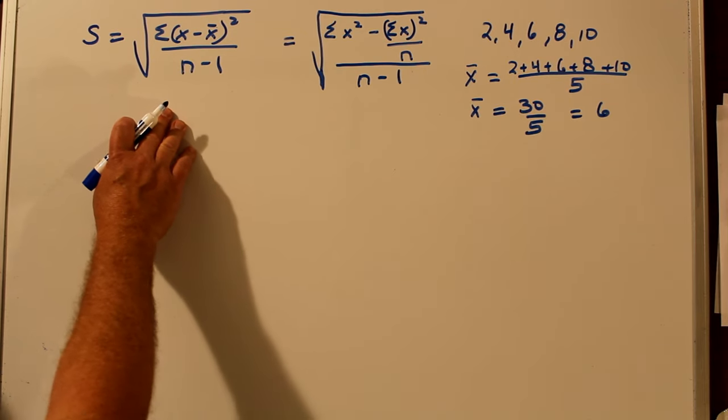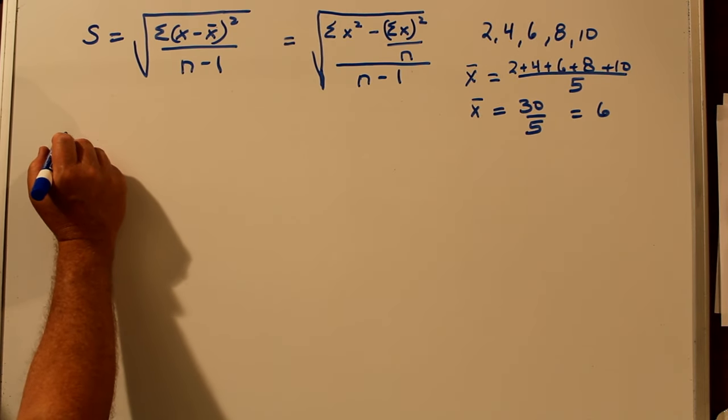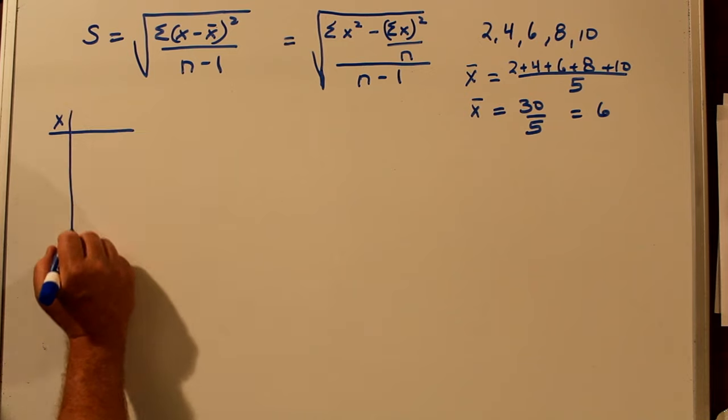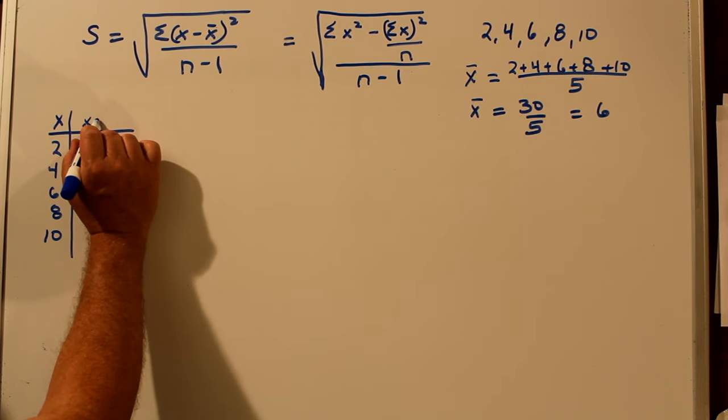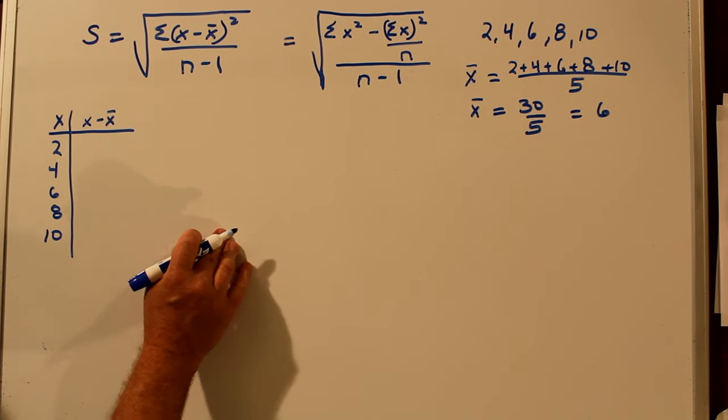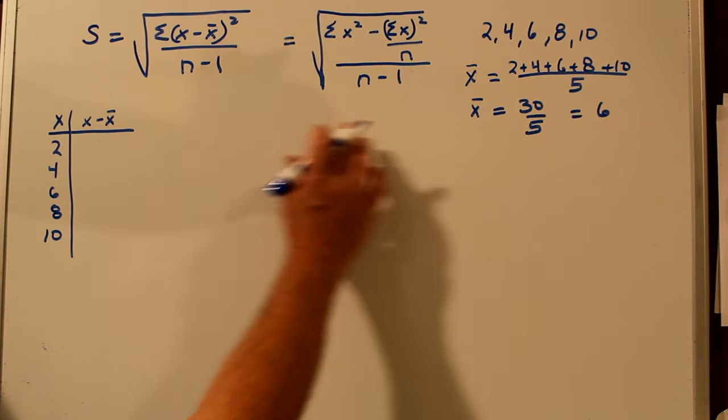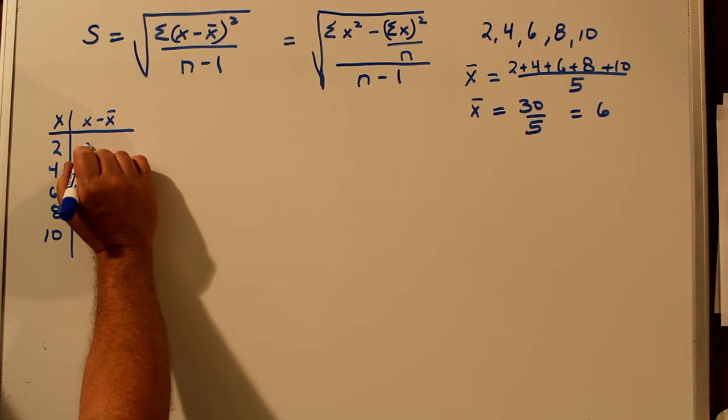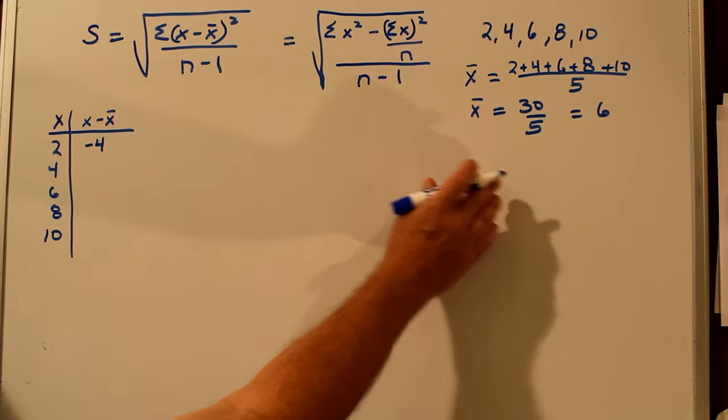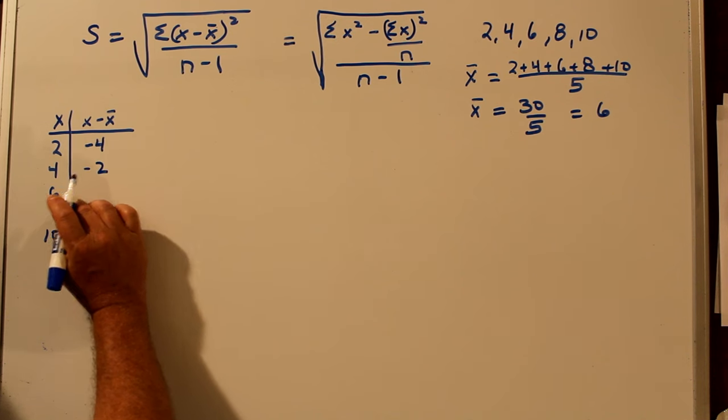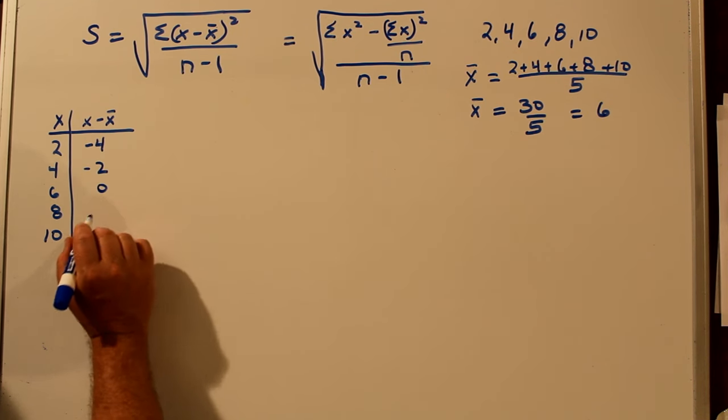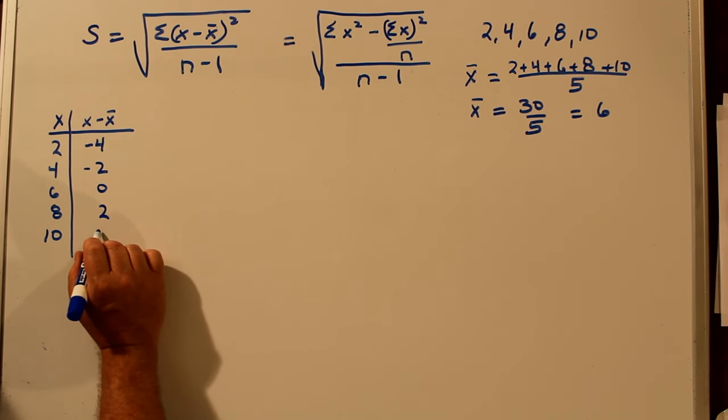Let's find the standard deviation the first way. Let's take the number in our groups, X, and the difference each number is away from the mean, X minus X bar. In this case, six. So two minus six is minus four. Four minus six is minus two. Six minus six is zero. Eight minus six is two. And ten minus six is four.